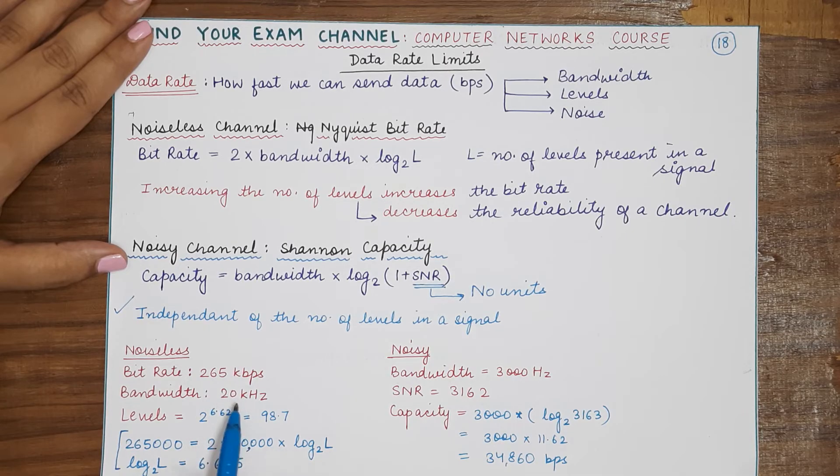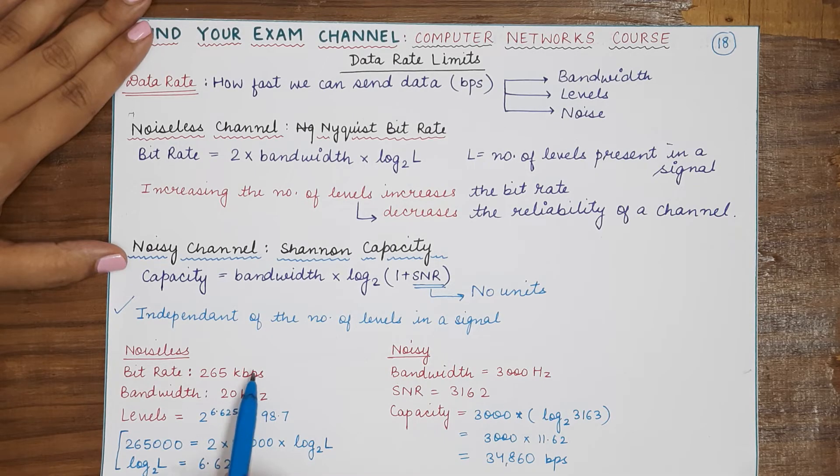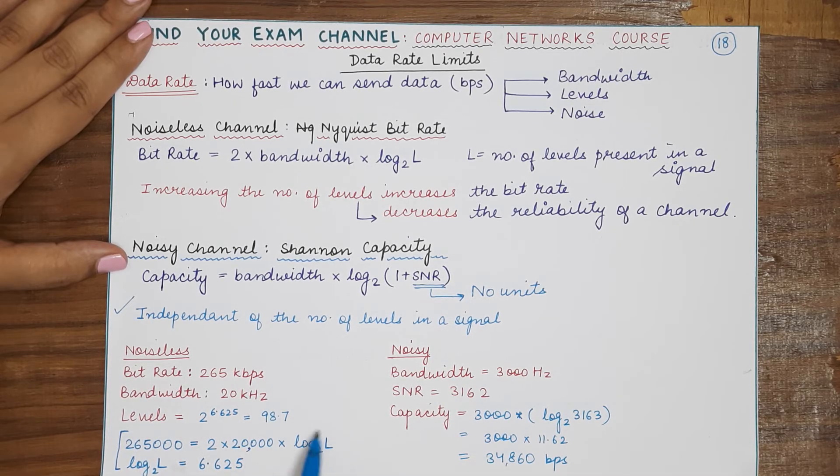And I have also multiplied the bandwidth by 1000 because this was also in kilohertz. So we need bit rate in bits per second and bandwidth in hertz to calculate the number of levels.